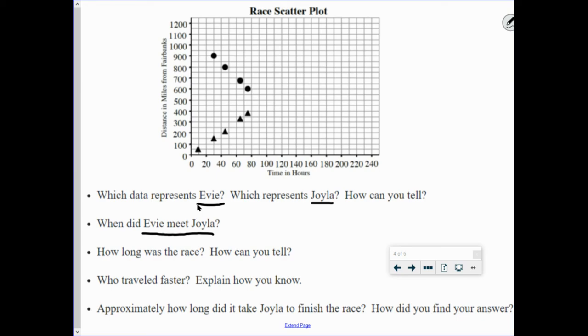How long was the race? Can you determine that from here? Yes, you can. Now again, you might want a ruler or some other source that might help you with this, but how can you tell that? Who traveled faster? Explain how you know. And approximately how long did it take Joila to actually finish the race? How did you find your answer?